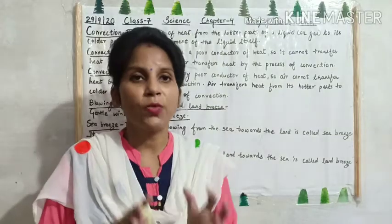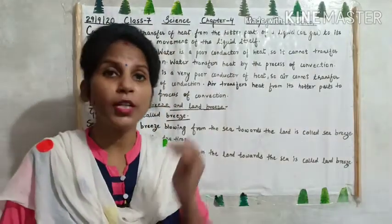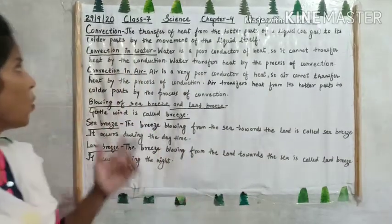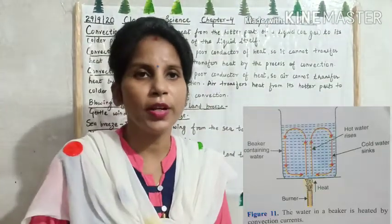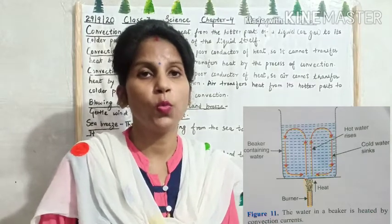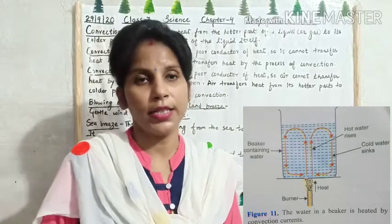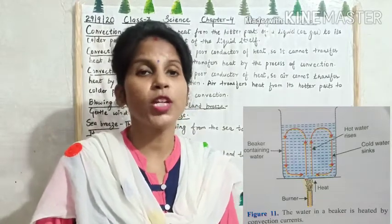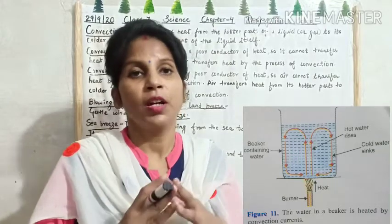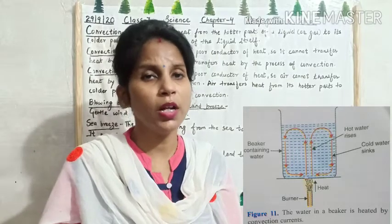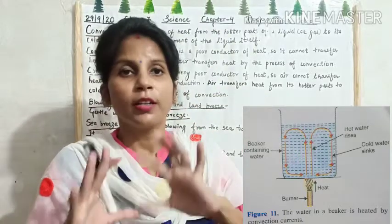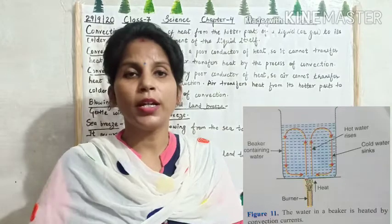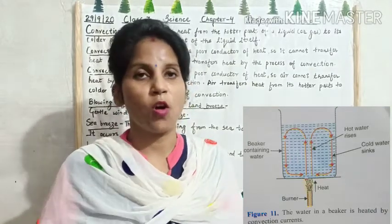The particles move and the transfer of heat goes from hotter to the colder parts, and it takes place in liquids as well as gases. For example, suppose we take a beaker and heat it over a burner. The bottom of the beaker gets heated and the water also gets heated. Gradually, the whole water becomes warm. Hot water is lighter than cold water, so the warm water goes up and the cold water goes down, creating convection currents, and the whole water gets warm.